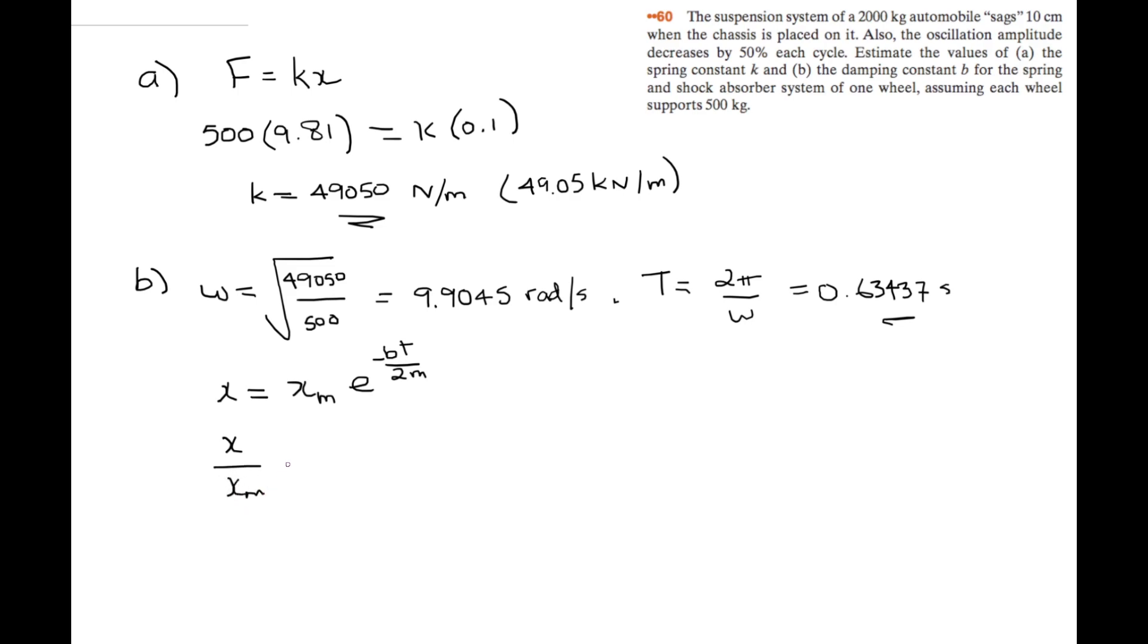So after one cycle, one cycle with this time. So if we start at time 0, we have x equals xm. But we're going to do one cycle later, which is 0.63437 seconds, and then the new x is half of the xm.